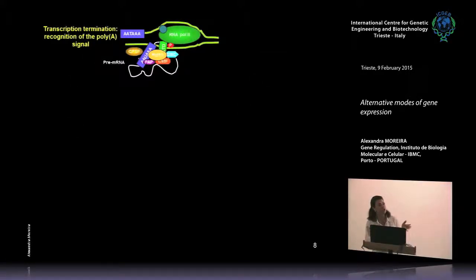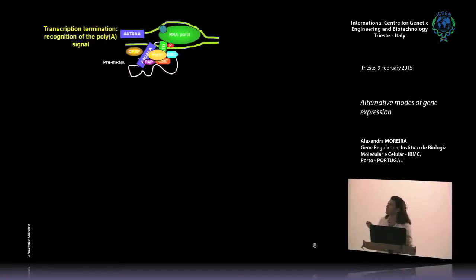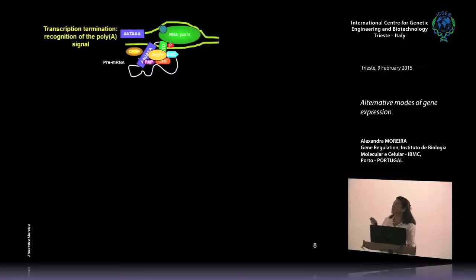The point where RNA Pol2 stops is signaled by a poly-A signal present in the DNA, like AATAAA, but also by other elements. RNA Pol2 must terminate shortly after the end of the gene — otherwise it will invade the next downstream promoter and interfere with transcription of the next downstream gene. Termination is also necessary for the process of cleavage and polyadenylation of the pre-mRNA to take place.